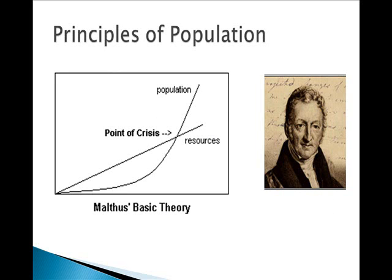Thomas Malthus was also a big influencer of Darwin. He was a minister and a demographer. When examining how populations expand, he determined that a population expands exponentially and that any limited resource can only expand linearly. The difference between the population and the resources is what he called a Malthusian catastrophe. He determined that with human populations, the only way to resolve the catastrophe was through natural causes such as accidents and old age, misery such as war, pestilence, plague, and above all famine, and vice — which for Malthus included infanticide, murder, contraception, and homosexuality — so that excess human population could be disposed of.